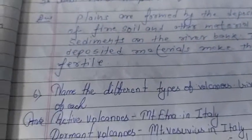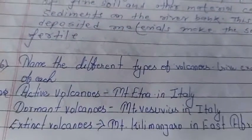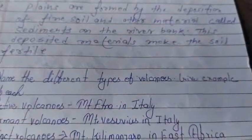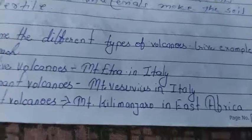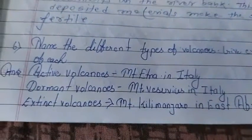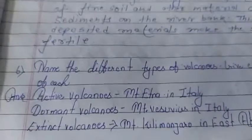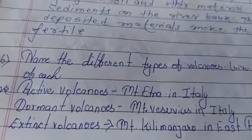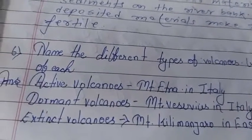Now come to question 3: name the different types of volcanoes and give examples. The solution is there are 3 types of volcanoes. First, active volcanoes — example: Mount Etna in Italy.